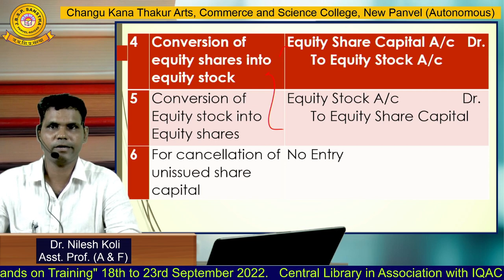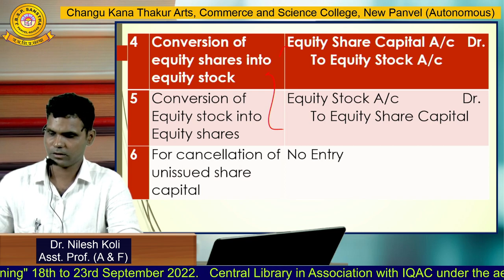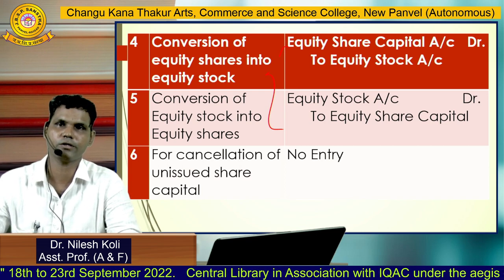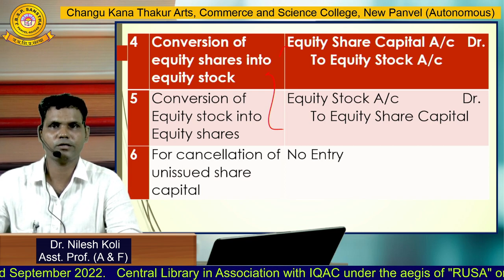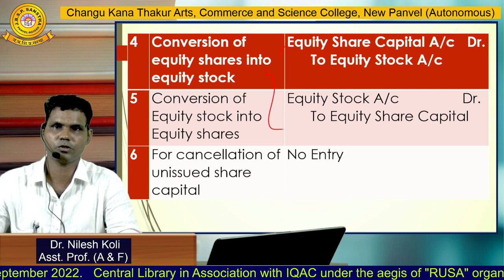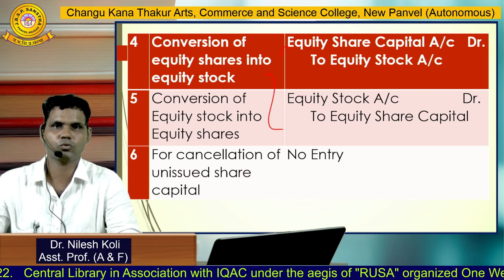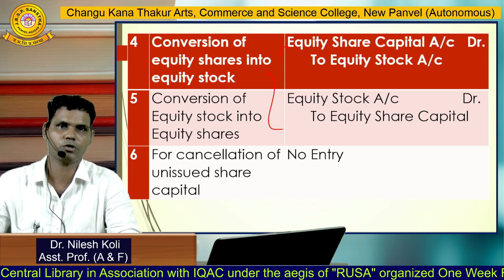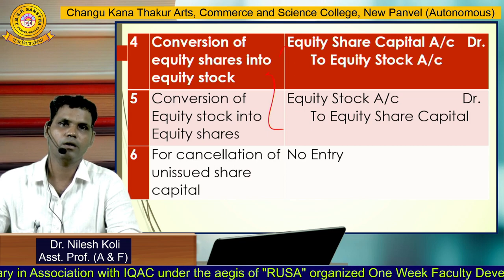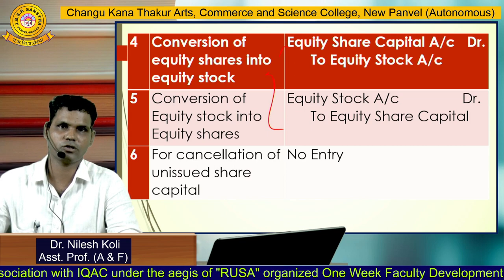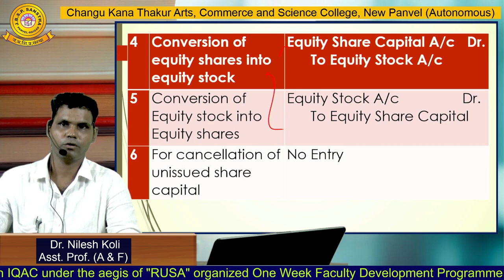So students, we have discussed the first method of internal reconstruction — alteration of share capital — which consists of five parts: increase in share capital, consolidation of shares, subdivision of shares, conversion of equity shares into equity stock and vice versa, and cancellation of unissued share capital. Thank you.